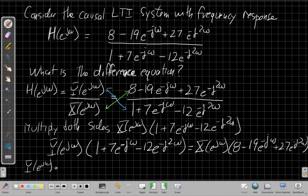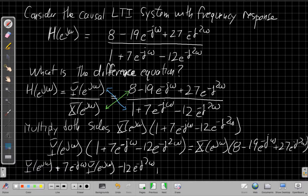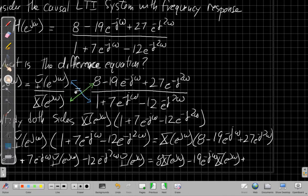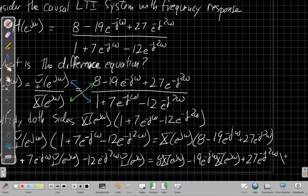So I end up with Y of e to the j omega plus 7 e to the minus j omega times Y of e to the j omega minus 12 e to the minus j 2 omega times Y of e to the j omega is equal to 8X of e to the j omega minus 19 e to the minus j omega times X of e to the j omega plus 27 e to the minus j 2 omega X of e to the j omega.